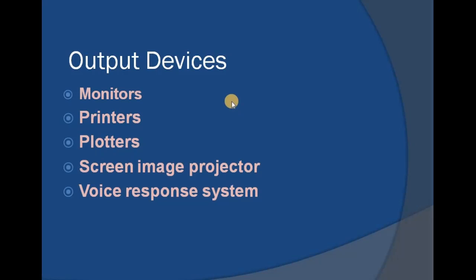The most common output devices are monitors and printers. Apart from those, we have plotters, screen image projectors, and voice response systems or speakers. All of these fall under the category of output devices. Their basic task is to transfer information or results to the user, so the user can capture or take a hard copy of that information.